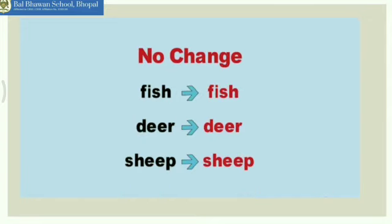Now children, there are some words where we do not change the spelling — it remains the same, nor do we add anything to it. For example, fish — the plural will be fish. Deer — the plural will be deer. Sheep — the plural will be sheep only. We will not add anything, nor will we change the vowel.